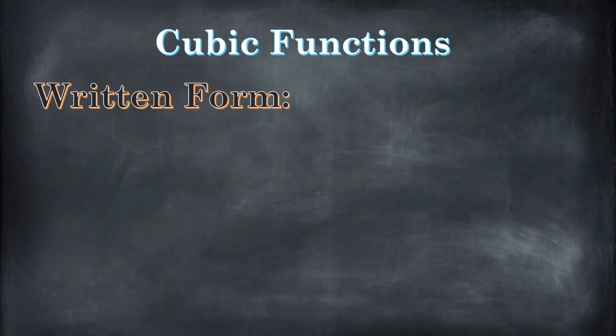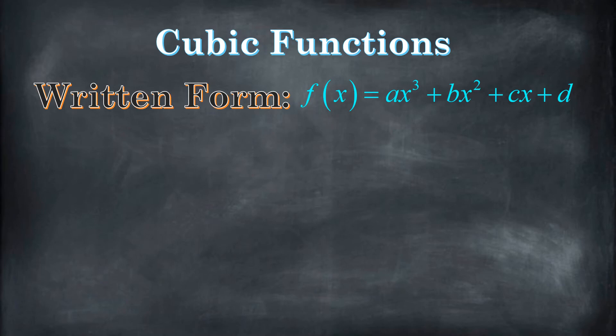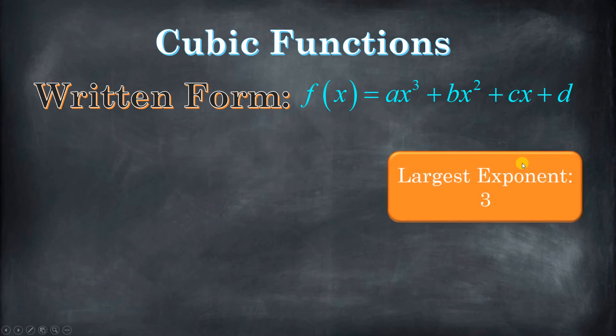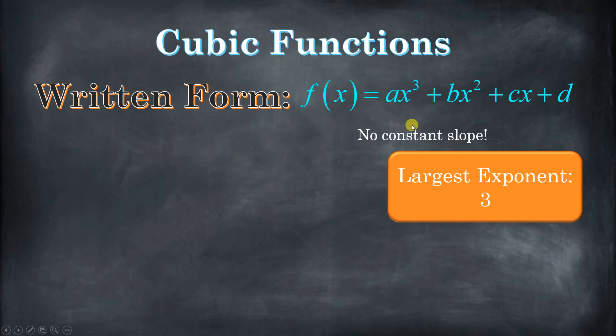Let's talk about cubic functions. In written form, they're going to look something like ax cubed plus bx squared plus cx plus d. Once again, we do not have a constant slope. We do have a y-intercept that is the d value. But the key thing you need to recognize is that the largest exponent is 3. So if you're given a function and you're being asked what kind it is, if the biggest exponent is 3, you know it's cubic.